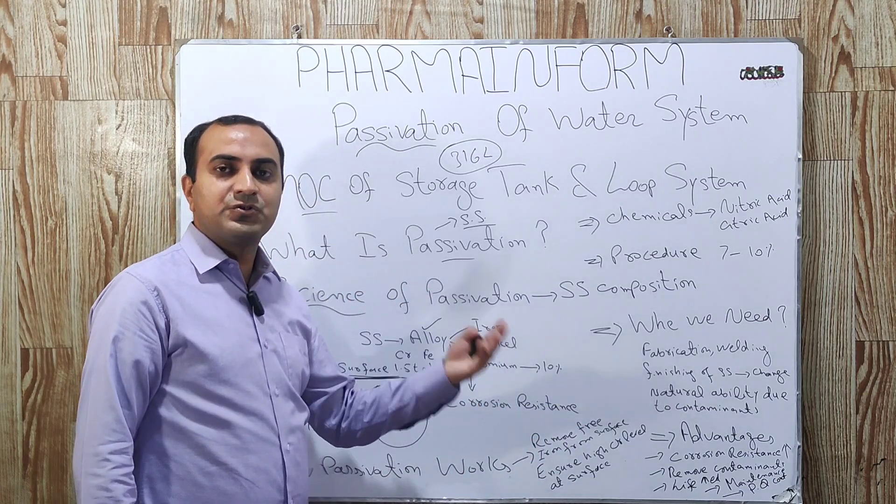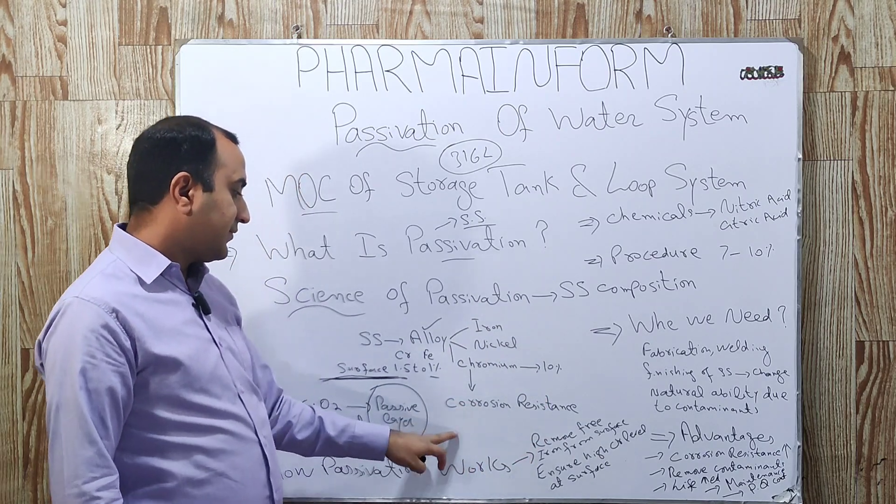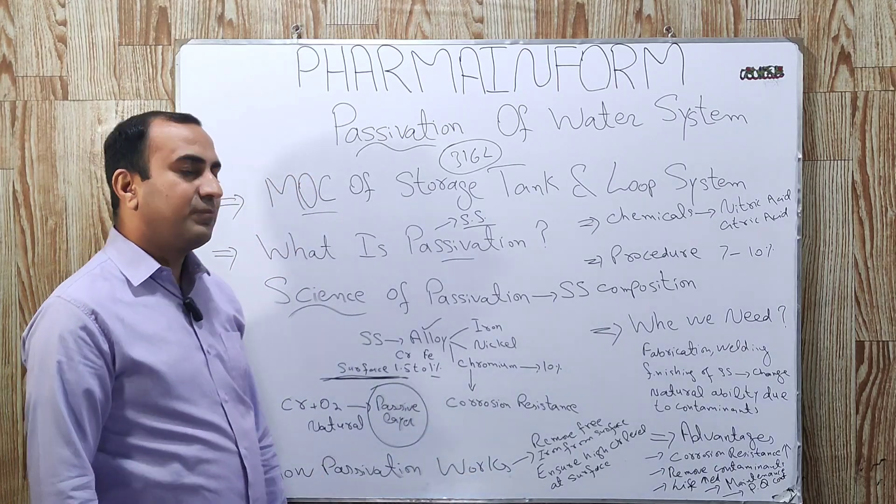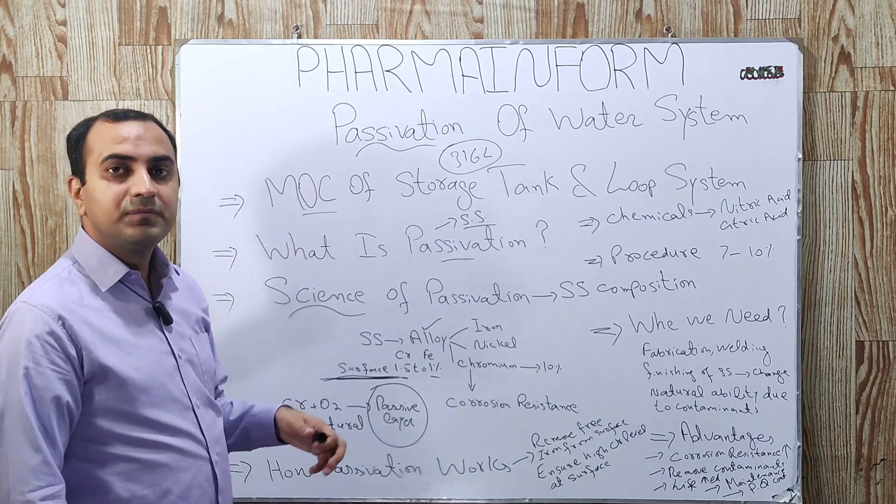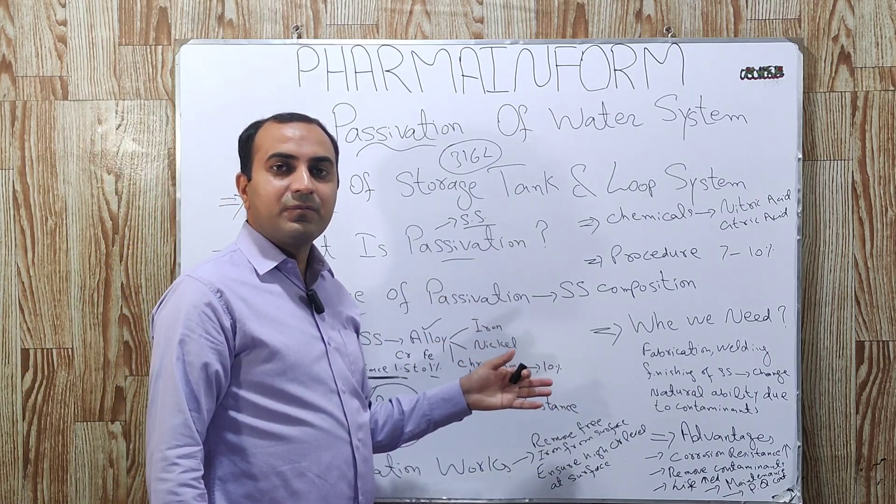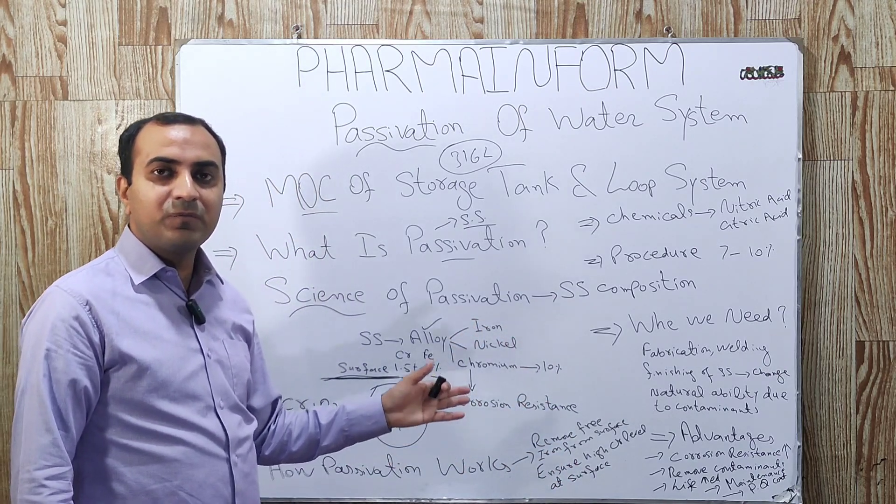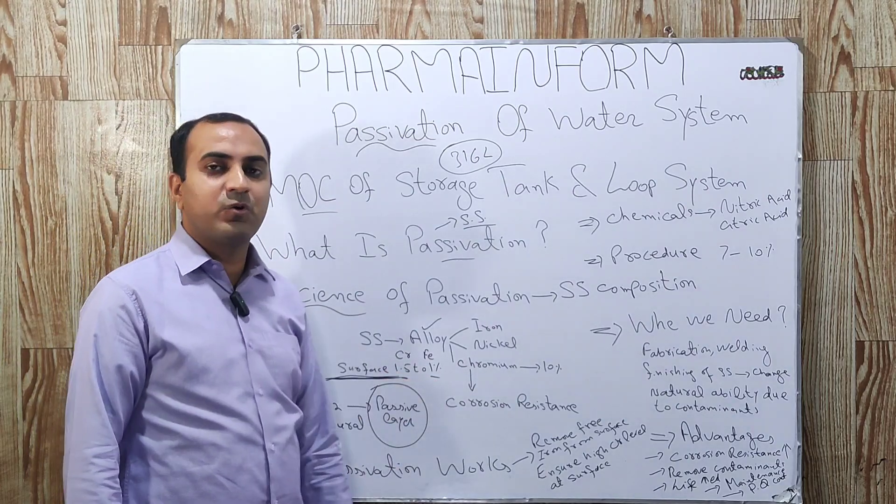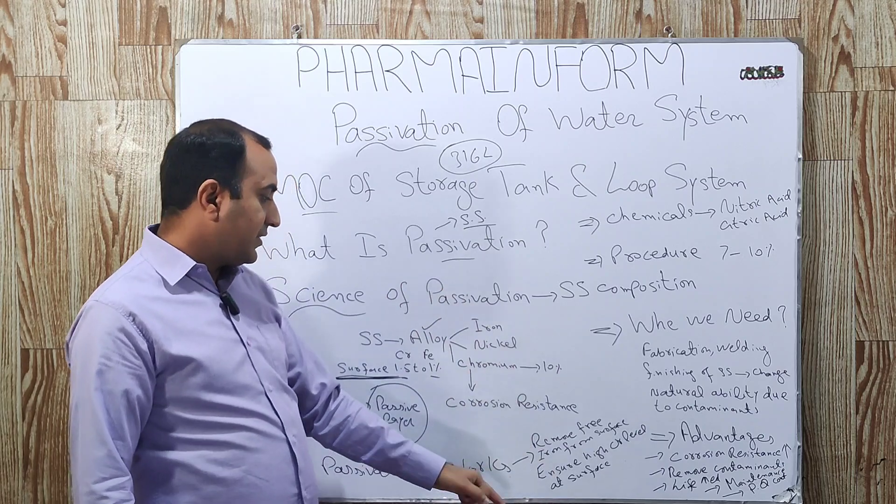And it ensures the availability of chromium available at the surface to form the passive film, mean to form the protective layer. It was about the working of passivation. A ratio of chromium to iron about 1.5 to 1% or high is considered good for the passivation.